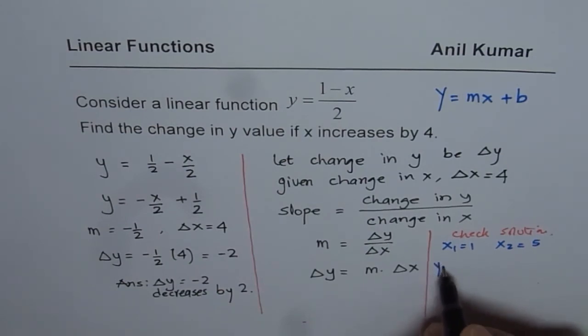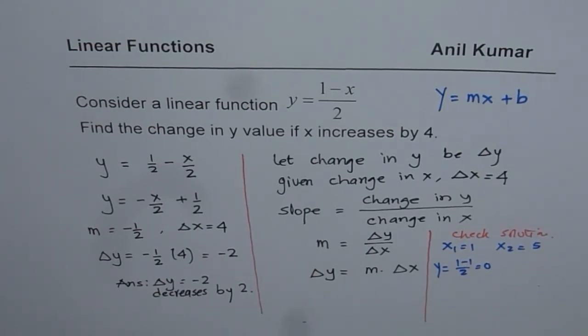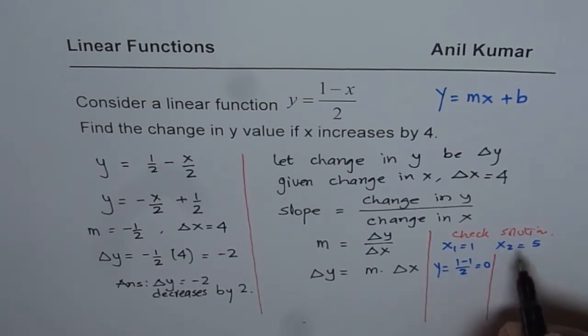So for x1, y will be equals to 1 minus 1 over 2, which is 0. And for x2, let me again divide this. If x2 is 5, then y is equals to 1 minus 5 over 2. And that is equals to minus 4 divided by 2, which is minus 2.